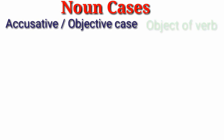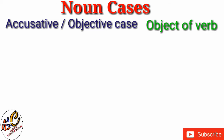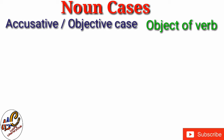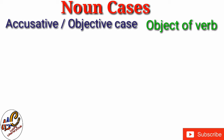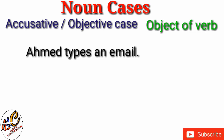Objective case is when a noun is the object of the verb, which is affected by the verb. An object can be a noun, pronoun, or any phrase. Let's take an example: Ahmad types an email. Here the action is of typing, therefore 'type' is the verb. Ahmad is the doer or agent of the action, therefore it is the subject, and the action of typing is on email, therefore email is the object.